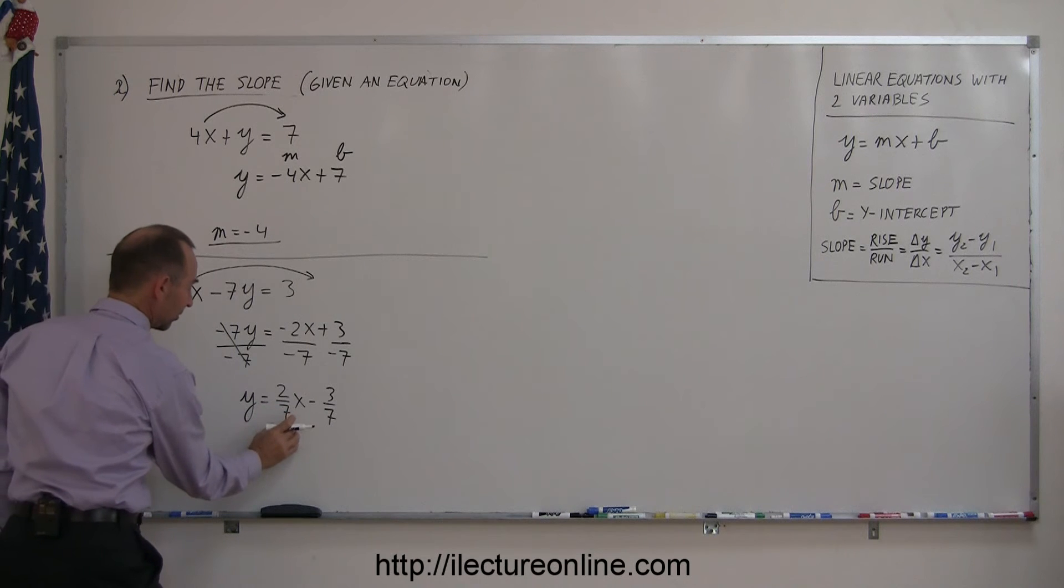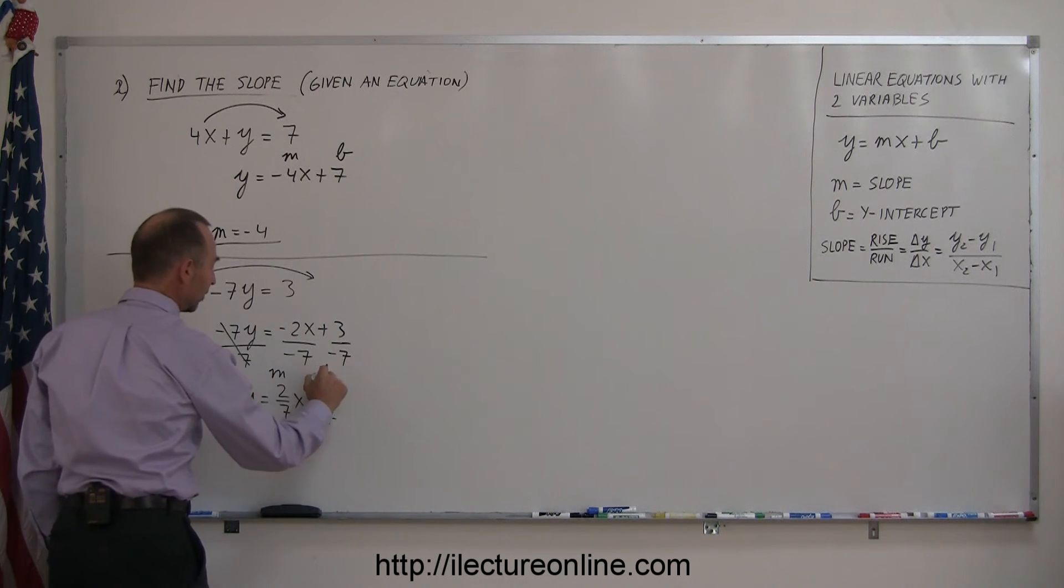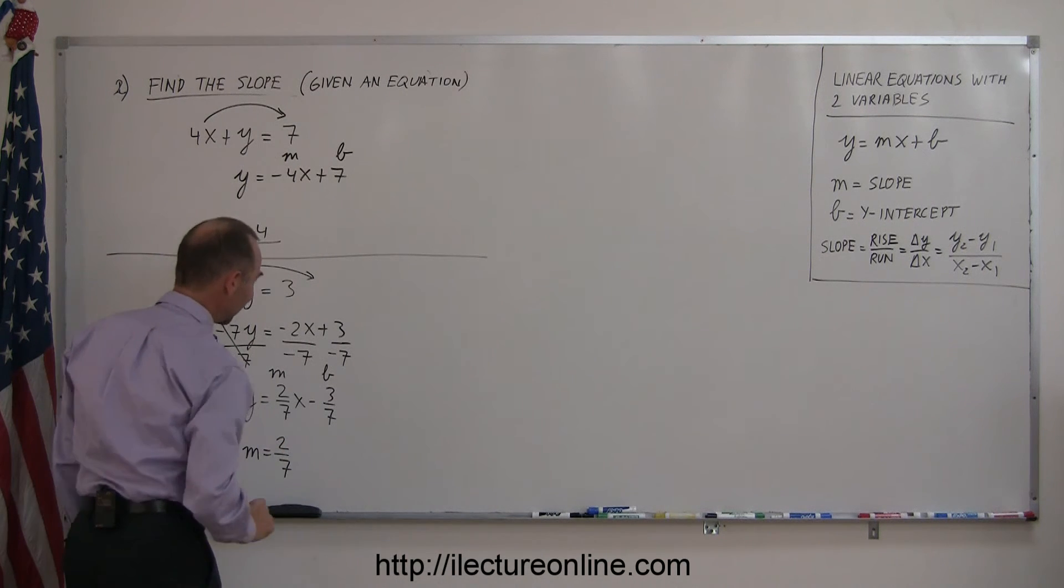Because remember, the number in front of the x, the coefficient, that's equal to the slope. This number here is the y-intercept, so here m equals 2 over 7.